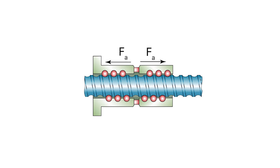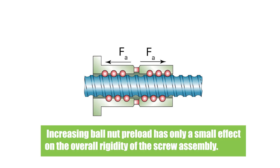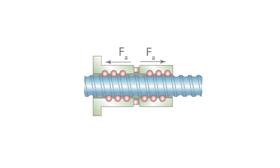For the ball nut, higher preload is commonly associated with higher rigidity, but the ball nut is typically the most rigid component in the system, so increasing the preload from 3% to 5%, for example, has minimal effect on the overall rigidity of the screw assembly. The exception to this would be if you're upgrading from a ball nut with no preload to one that is preloaded.